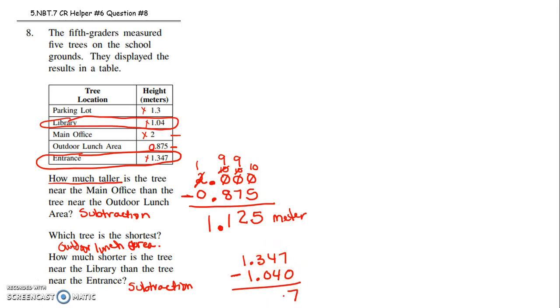7 minus 0 is 7, 4 minus 4 is 0, 3 minus 0 is 3, 1 minus 1 is 0. So it's 307 thousandths of a meter shorter.